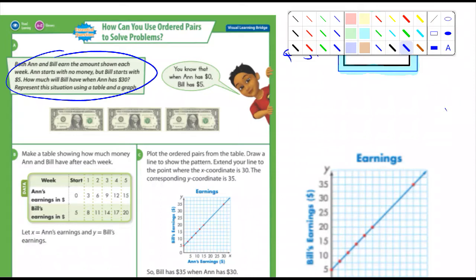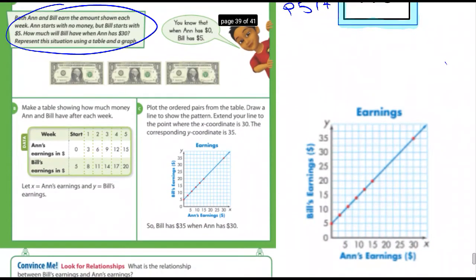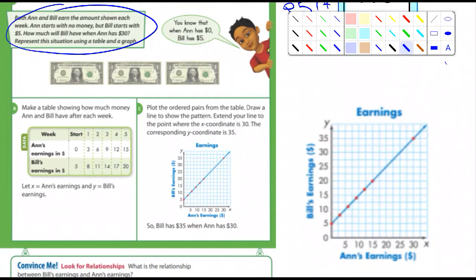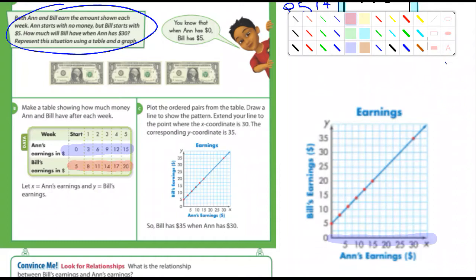Let X be Ann's earnings and Y be Bill's earnings. And it says, plot the ordered pairs from the table. Draw a line to show the pattern. So I copied it and moved it over so it's a little bit bigger on our screen here. So Ann starts at zero. Let me do this. Ann's earnings. Let X be Ann's earnings. So I'm going to do this right here.